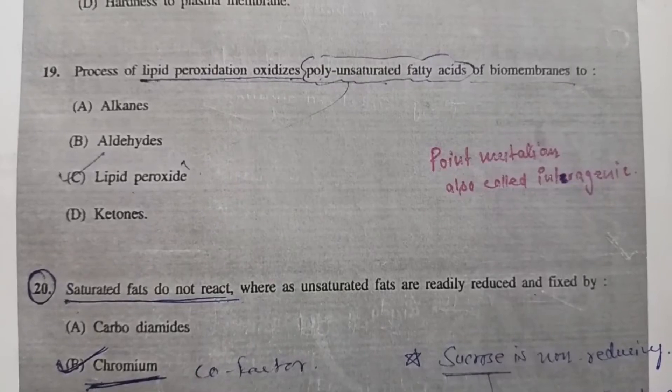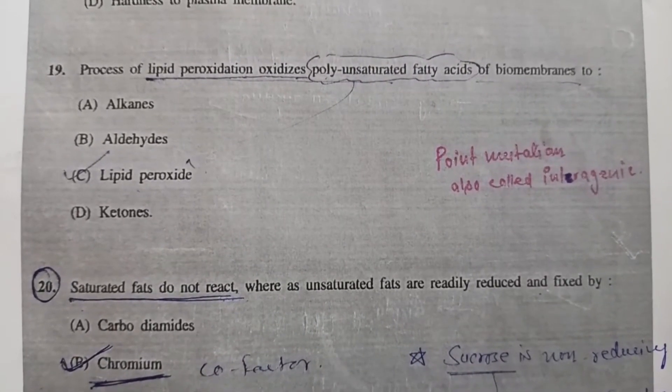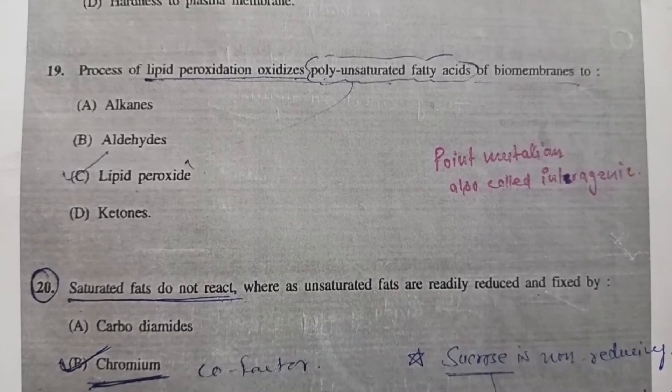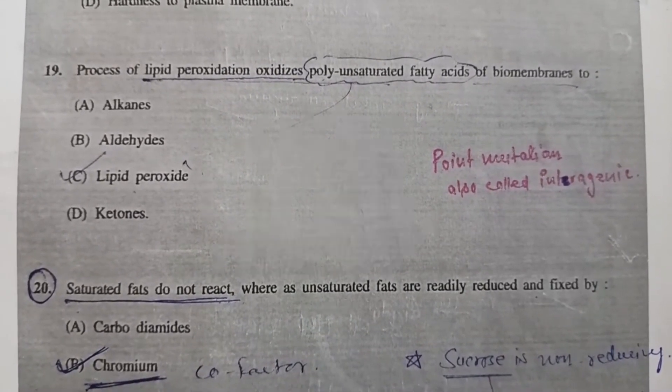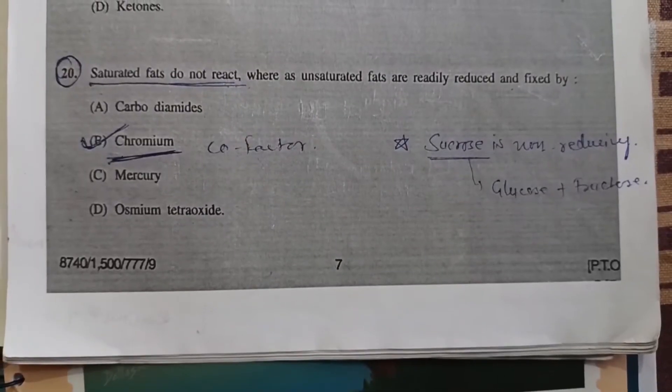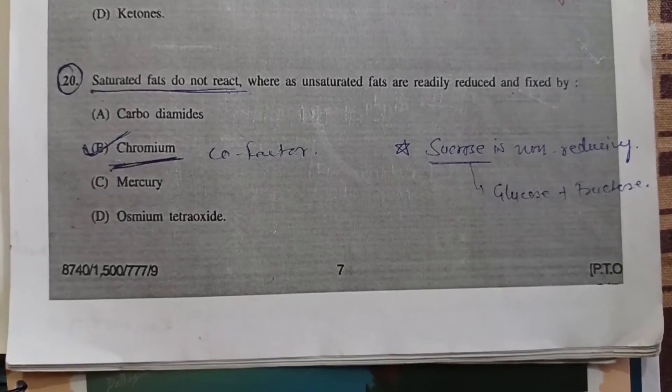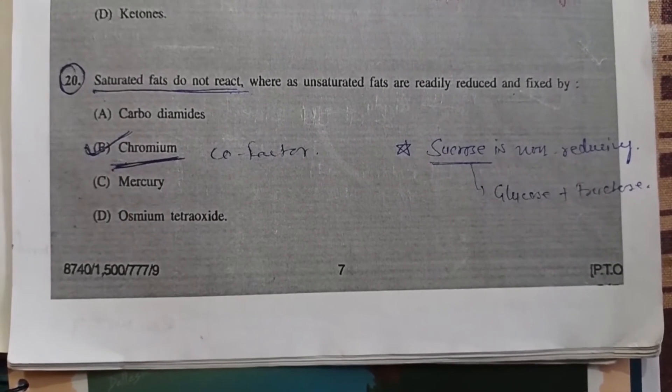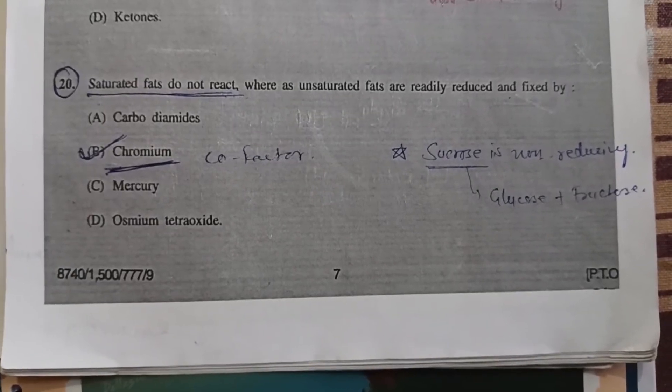Question 19: Process of lipid peroxidation oxidizes polyunsaturated fatty acids of biomembranes to lipid peroxide. Question 20: Saturated fats do not react whereas unsaturated fats are readily reduced and fixed by - Option B, osmium, which is a cofactor.